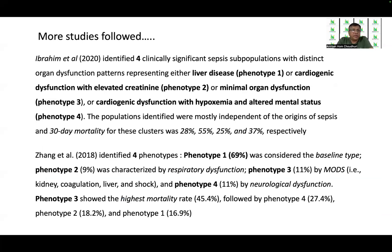Regression analysis showed that these phenotypic clusters were largely independent of age, cause of sepsis, obesity, and other comorbidities. And the phenotypes differed significantly in the association between clinical outcomes and the predictors. So prediction outcome analysis, if tailored down to these four phenotypes, would probably be more accurate. More studies followed. Ibrahim et al. in 2020 identified four clinically distinct sepsis subpopulations with distinct organ dysfunction patterns: phenotype 1 with liver disease, phenotype 2 with cardiogenic dysfunction with elevated creatinine, phenotype 3 with minimal organ dysfunction, and phenotype 4 with cardiogenic dysfunction with hypoxemia and altered mental status.